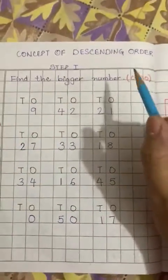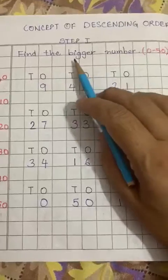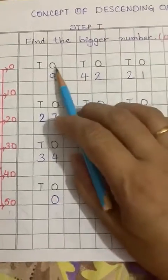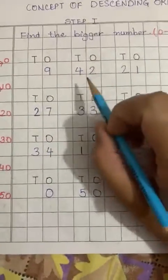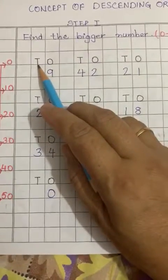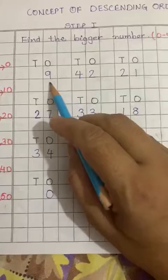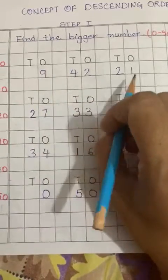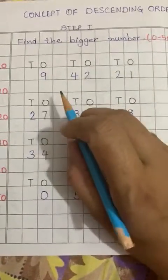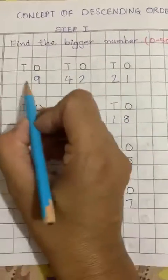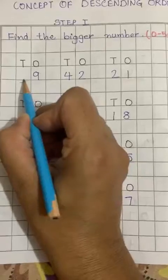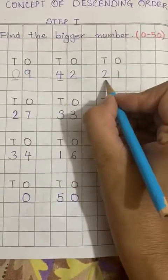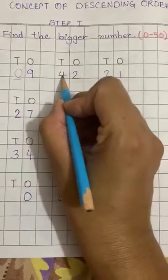Step 1 — we have to do it first. I have given numbers 0 to 50. You have to find the bigger number in step 1. Which number is bigger? It is determined by the 10's value and 1's value. When we find the 10's place value, if there is nothing in the 10's place, it means that it is 0. So here is 4 and here is 2, so the 10's place value gives us the big number.